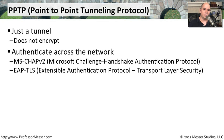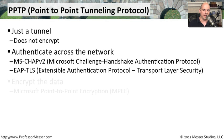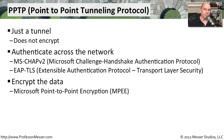PPTP can use different authentication methods to make sure you're able to build this tunnel, and those authentication methods use some type of encryption. A very common one is MSChap version 2 — Microsoft Challenge Handshake Authentication Protocol — which is integrated into Windows, so you can use your normal domain login to build that tunnel. You might also use EAP-TLS, which stands for Extensible Authentication Protocol Transport Layer Security, a way to authenticate with that username and password encrypted as it goes over the network. At that point, you need to encrypt the data, and a very common way in the Microsoft world is to use Microsoft Point-to-Point Encryption, or MPPE.